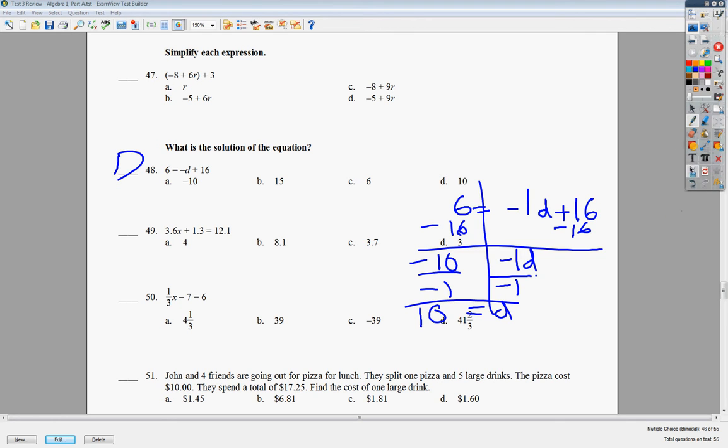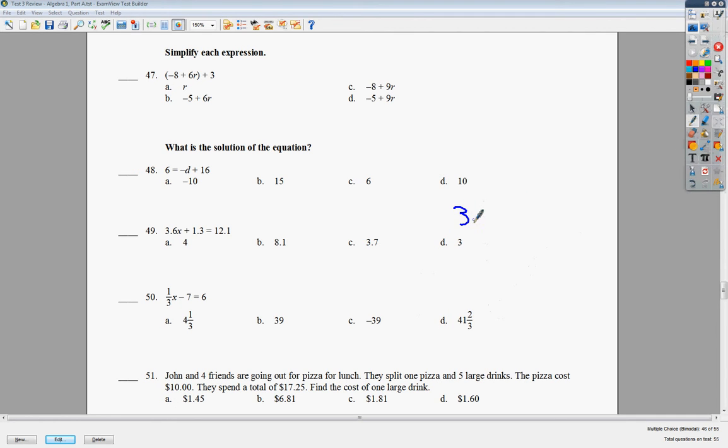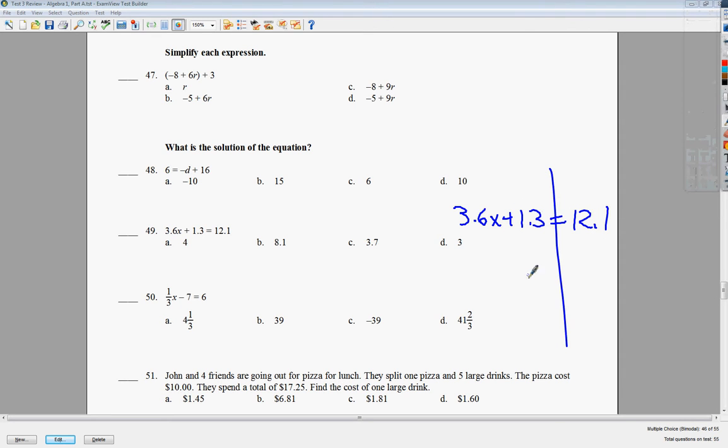49, we've done about 7 million of them. But I'll do it because I said my plan was to do all of them. 12.1 minus 1.3 is 10.8. This shows multiply. I need to divide. And end up with x is equal to 3. So the answer to number 49 is d.